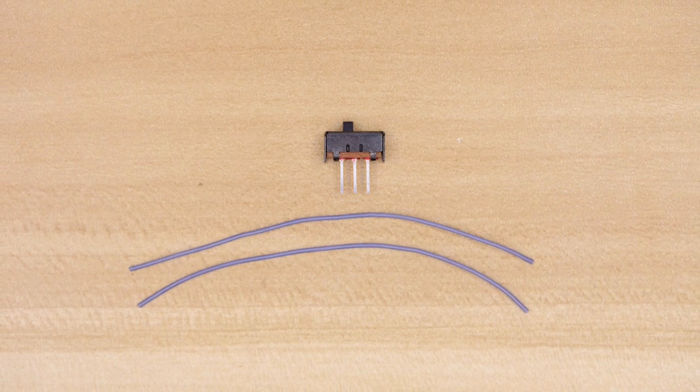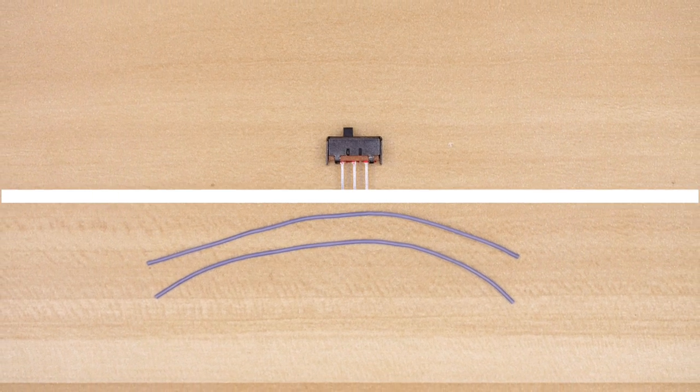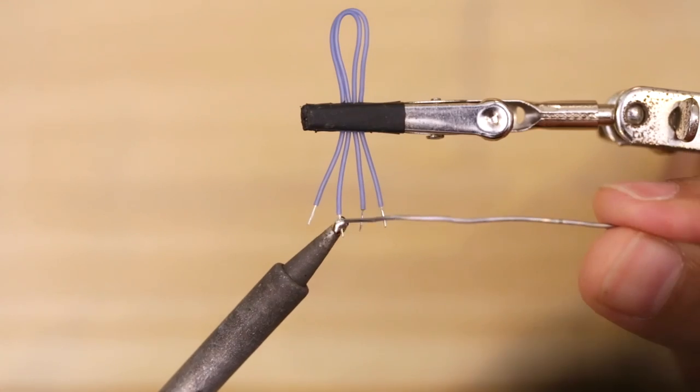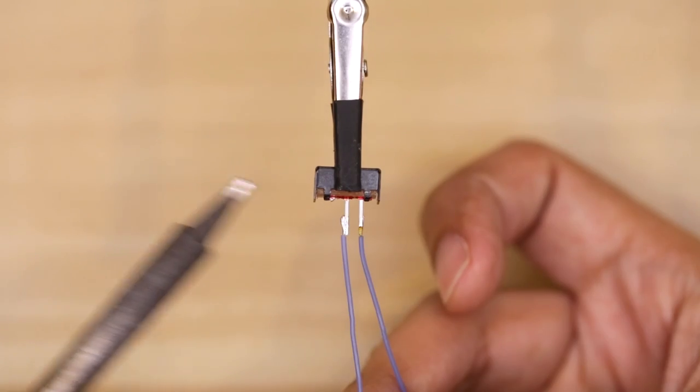I like to start every project by wiring up the slide switch. We'll need two pieces of wire to connect it to the Adafruit Feather. I tin the wires and then solder them to the pins on the slide switch.